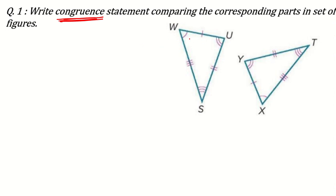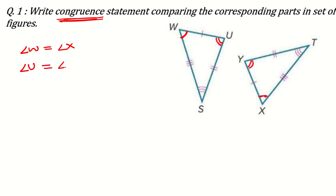I will tell you here. First, we talk about angle W. You see, angle W has only one arc, and here also we have one arc for angle X. So it means angle W will be equal to angle X. For angle U, you have two arcs, and here for angle Y you also have two arcs. It means angle U is equal to angle Y.